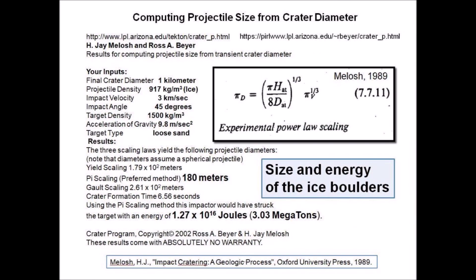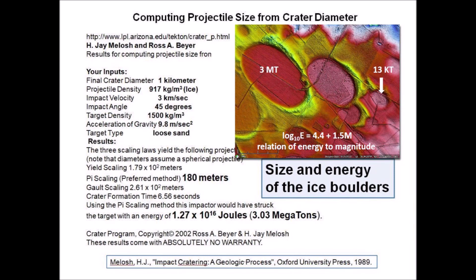Returning to the subject of liquefaction, we need to determine the energy of the ice boulder impacts that created the Carolina Bays. Using the size of the bay, the launch speed, the impact angle, and the type of projectile and target, we can calculate the energy using power law scaling equations published by Professor Jay Melosh and Ross Bayer. A Carolina Bay with a diameter of 1 kilometer requires an impact by an ice projectile with energy of 3 megatons of TNT, equivalent to a 7.54 magnitude earthquake. A bay with a diameter of 200 meters requires 13 kilotons of energy, equivalent to a 6.0 magnitude earthquake. Even the impacts that made small Carolina Bays had enough energy to liquefy saturated unconsolidated ground.